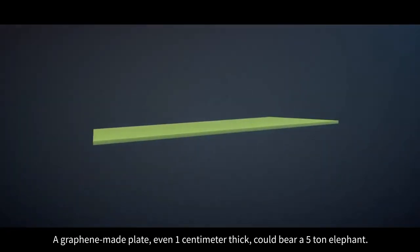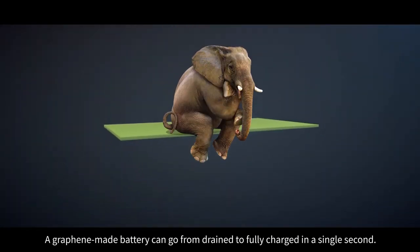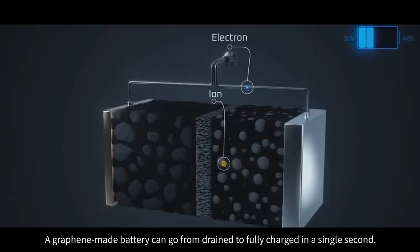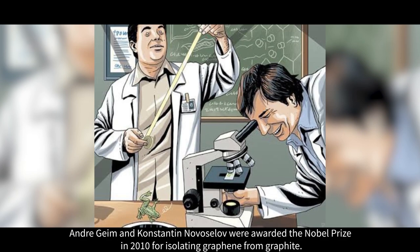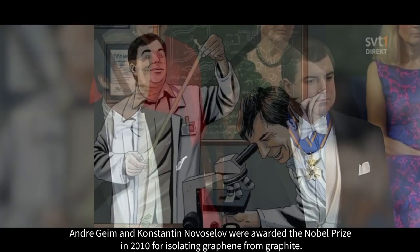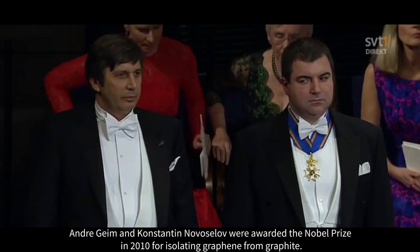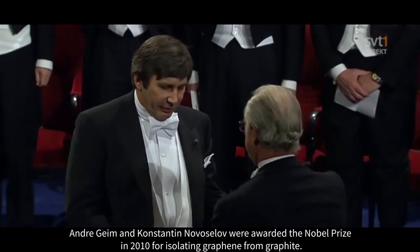A graphene-made plate even one centimeter thick could bear a five-ton elephant. A graphene-made battery can go from drained to fully charged in a single second. Andre Geim and Konstantin Novoselov were awarded the Nobel Prize in 2010 for isolating graphene from graphite.